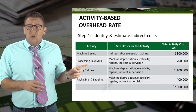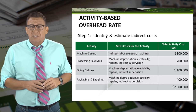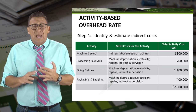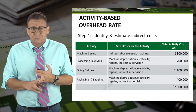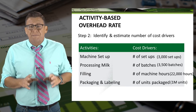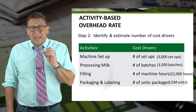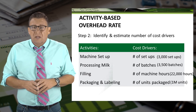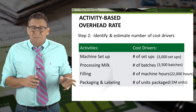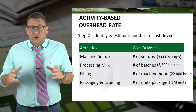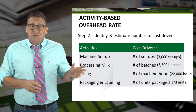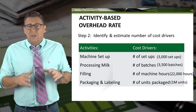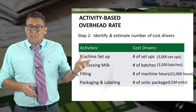Notice that the total overhead is still $2.5 million — the same amount we allocated with the plant-wide rate and the departmental rates. The next step is to identify the cost driver of overhead and estimate the number of activities that will occur for the period. A cost driver is the activity that most likely caused the overhead to occur for that function. As you can see here, the number of times the machine needs to be set up is the cost driver for the overhead associated with the setup activity.